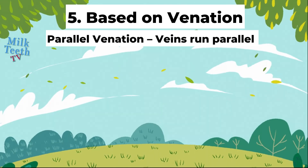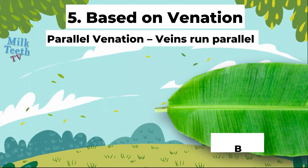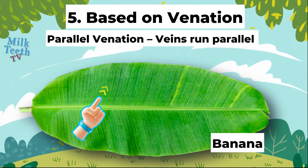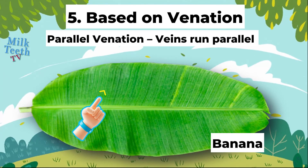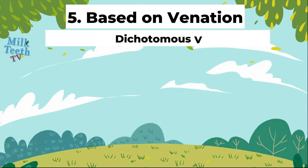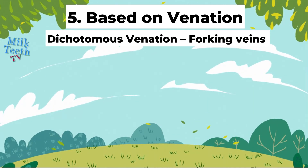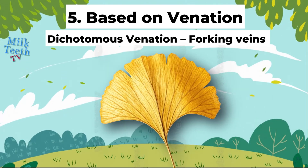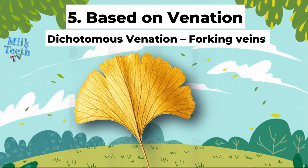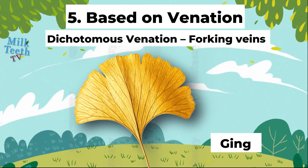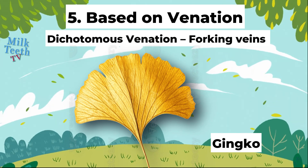Number 2: parallel venation. In such a type of vein arrangement, the veins run parallel to each other from the mid-rib towards the lamina of the leaf. Number 3: dichotomous venation — that is the forking veins arrangement. Such type of arrangement can be seen in ginkgo.